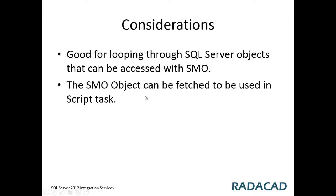In summary, with the SMO Enumerator and SQL Server Management Objects, you can loop through SQL Server objects in a For Each Loop. Sometimes the Information Schema approach is easier and sometimes SMO is easier — this only works with SQL Server, but it provides another way to access SQL Server metadata. Additionally, you can load SMO objects and use them directly in a Script Task with SMO namespaces.